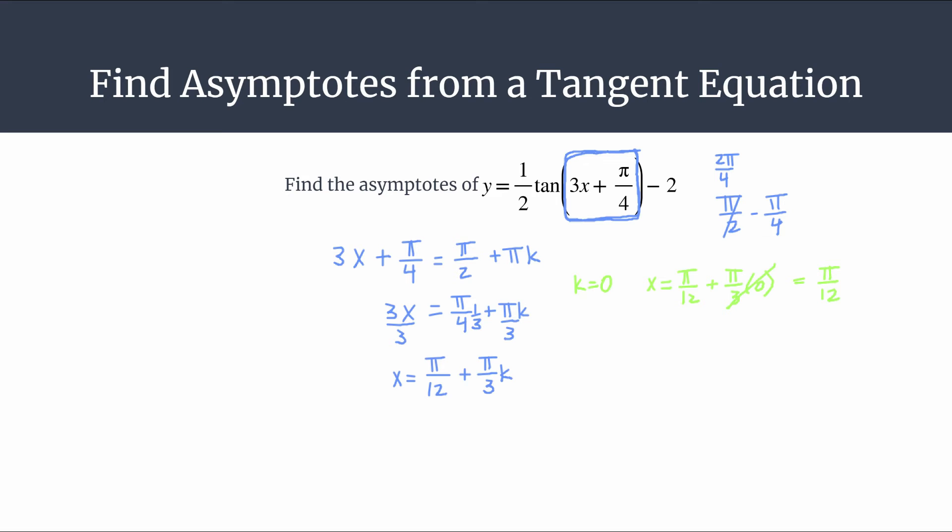Now let's say we want to find another vertical asymptote. This one will be to the right of the k equals 0 asymptote. Let's do k equals 1. All you have to do is substitute 1 into the equation. So we have x equals pi over 12 plus pi over 3 times 1. We need a common denominator here. Let's rewrite pi over 3 as 4 pi over 12. So our next asymptote will be at 5 pi over 12. Notice that's a period away, equal to pi over 3 away.